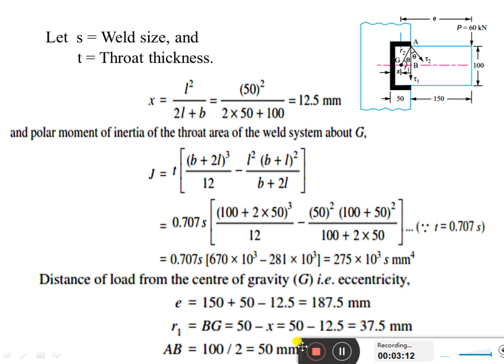The distance of load from the center of gravity G, that is eccentricity, we need to find out. The E value is the distance from the end of the load to the center of gravity of the weld, that is 150 plus 50 minus x value.